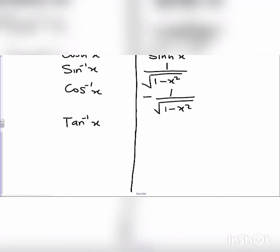For tan inverse of x, differentiating it will give us 1 over 1 plus x squared.